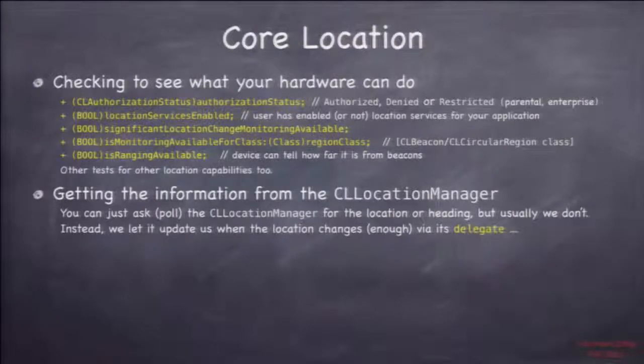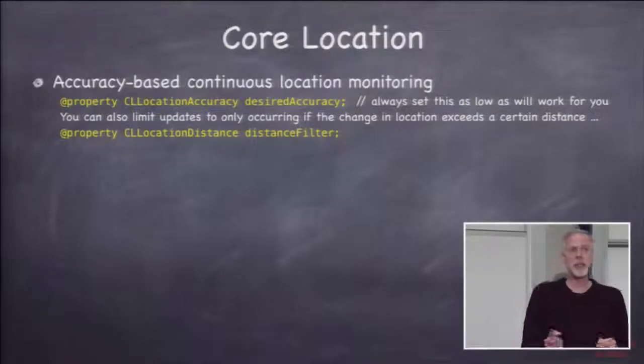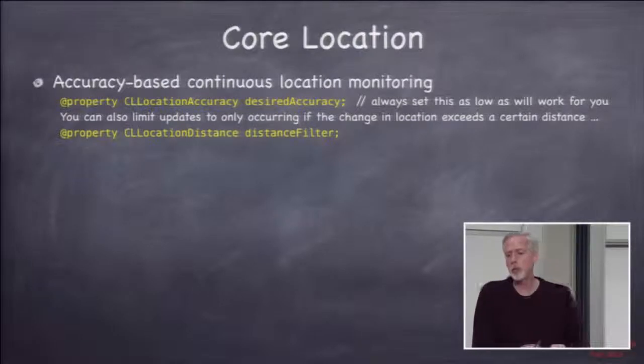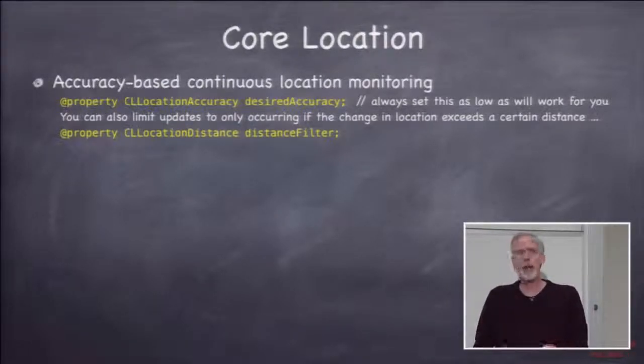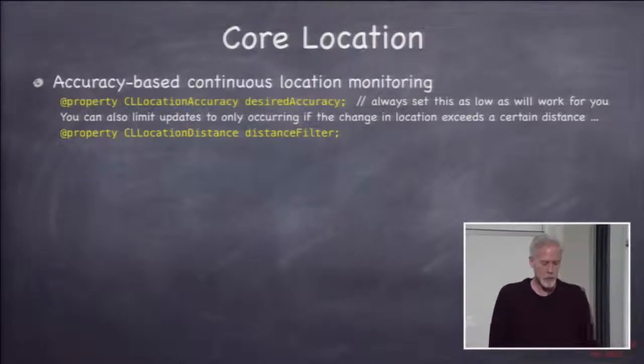So then getting it, you can ask a location manager, where am I right now? Kind of poll it. We never do that. We use this delegate thing. So let's talk about how the delegate thing works. First, you specify the accuracy. This is a location manager property, desired accuracy. I showed you the accuracies before. Specify that. And then also you can specify a distance filter. In other words, until the user moves at least this far, don't even tell me. So if they don't go at least 100 meters or a kilometer, don't tell me about it. So that saves battery, too.